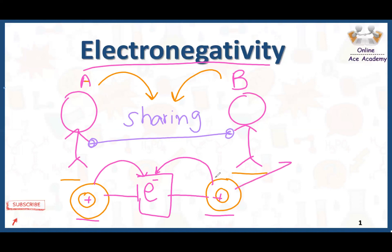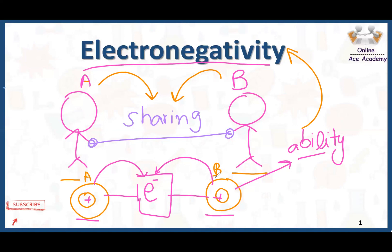The ability of these two atoms to attract the electrons towards themselves is actually called electronegativity. The ability of atom A and atom B to attract these electrons towards themselves is called electronegativity.